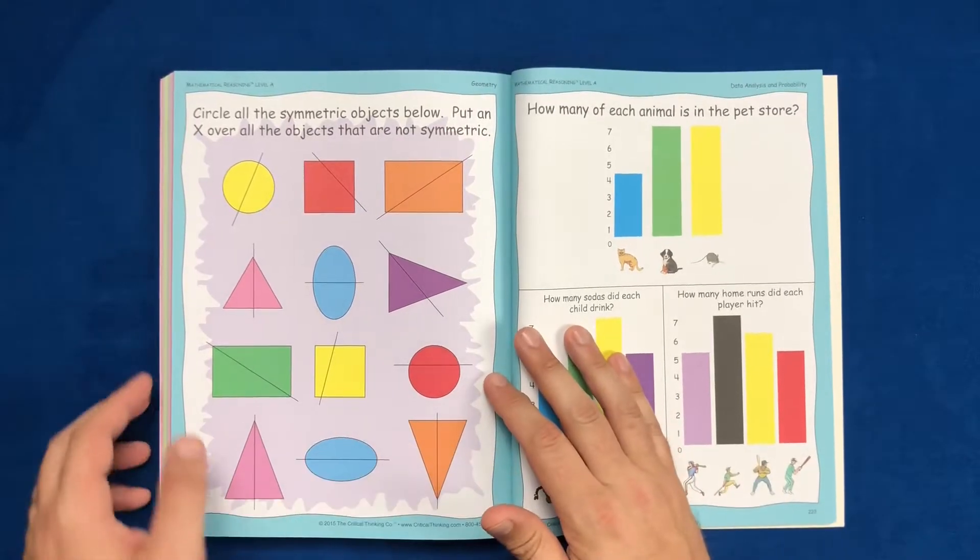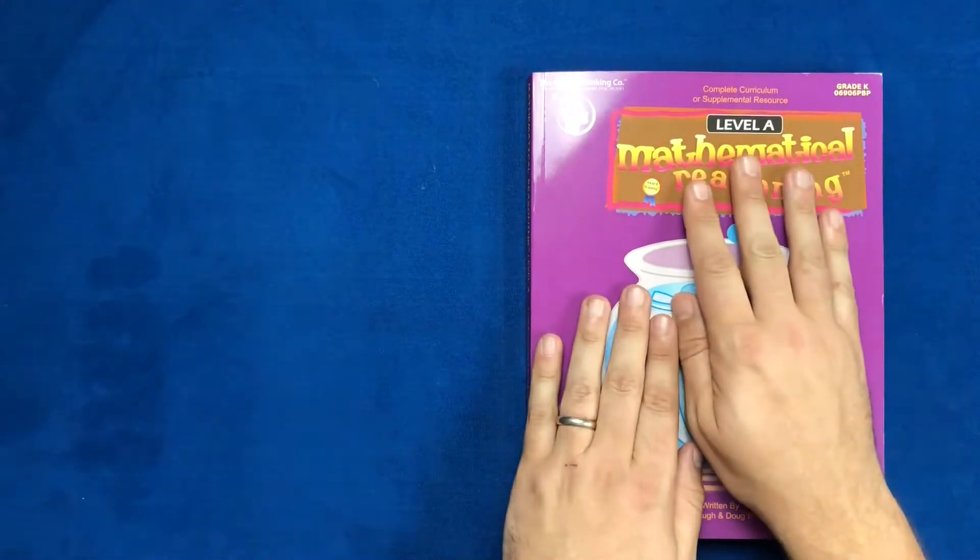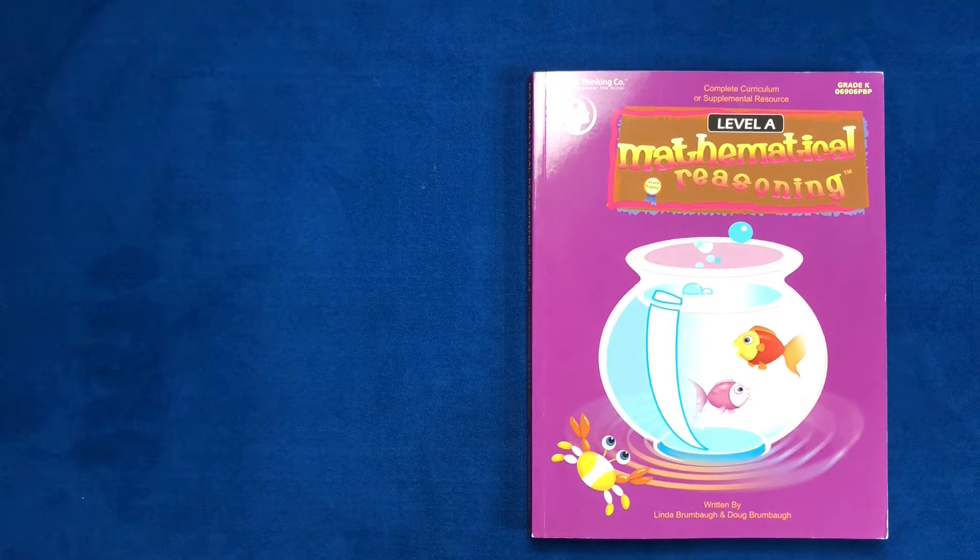Hopefully this was helpful to you, the Mathematical Reasoning Level A curriculum. Now, we like to kind of indicate who this is for, maybe who this is not for. First of all, great for visual learners. We really like this as a visual learning tool. The graphics are really nice. The colors pop. It's very interesting, very stimulating. Also, it's a very low budget. So if you're on a budget, a little bit budget conscious, and that's important to you, this is a good curriculum for that.